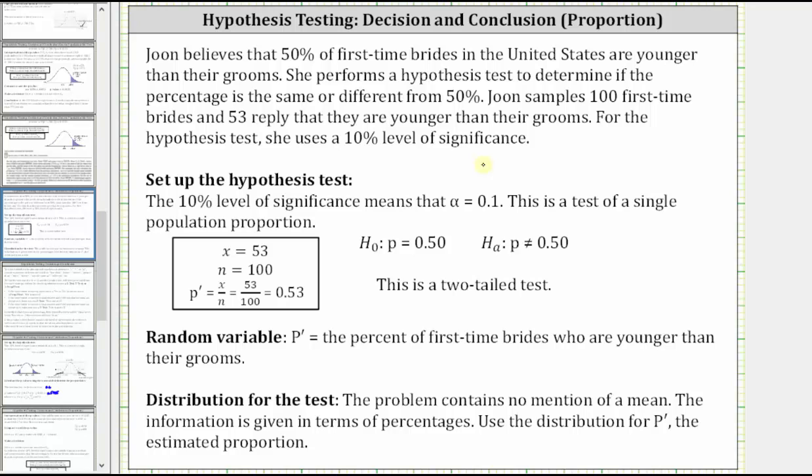Let's begin by listing all of the given information. First, the 10% level of significance indicates that alpha is equal to 0.1 as a decimal.